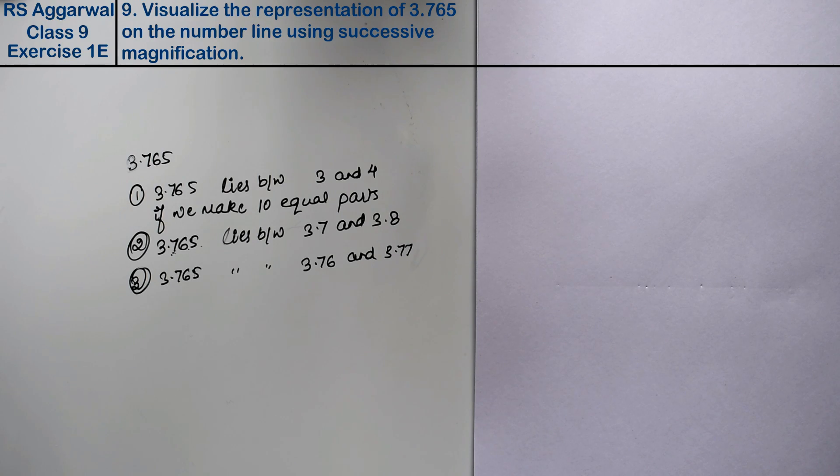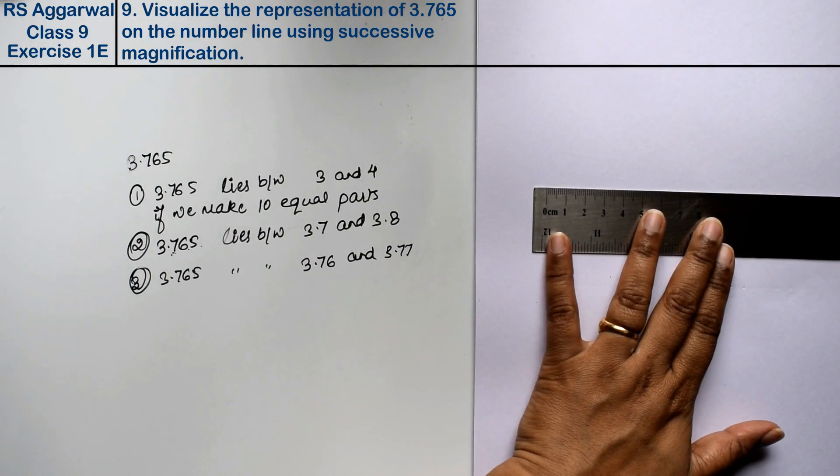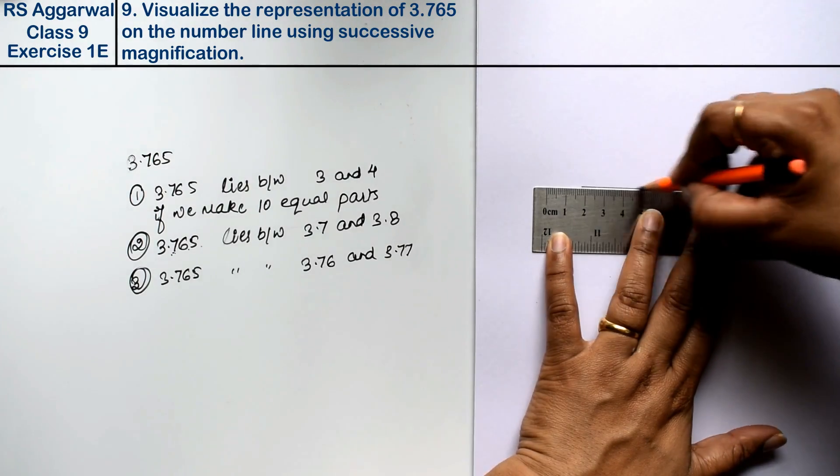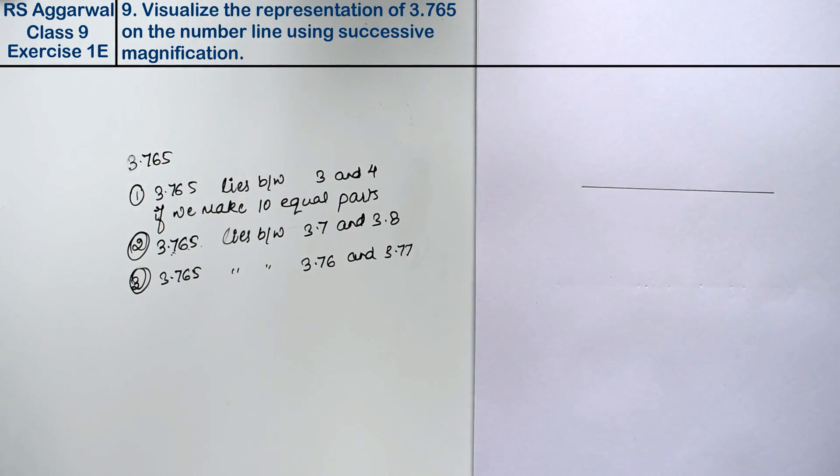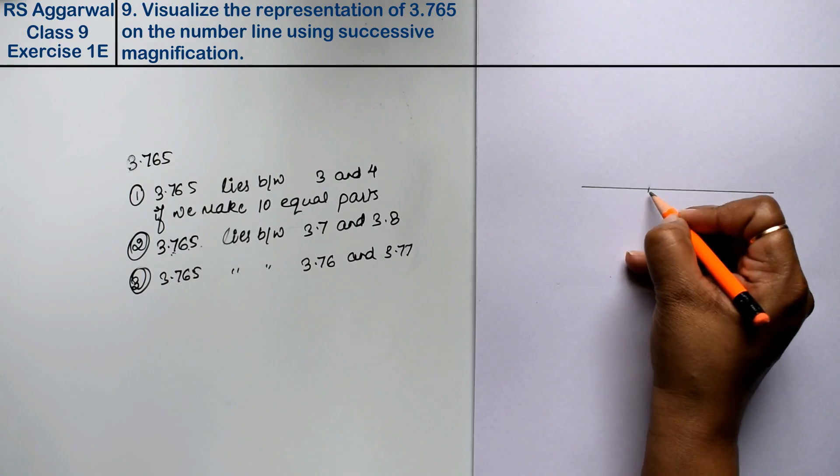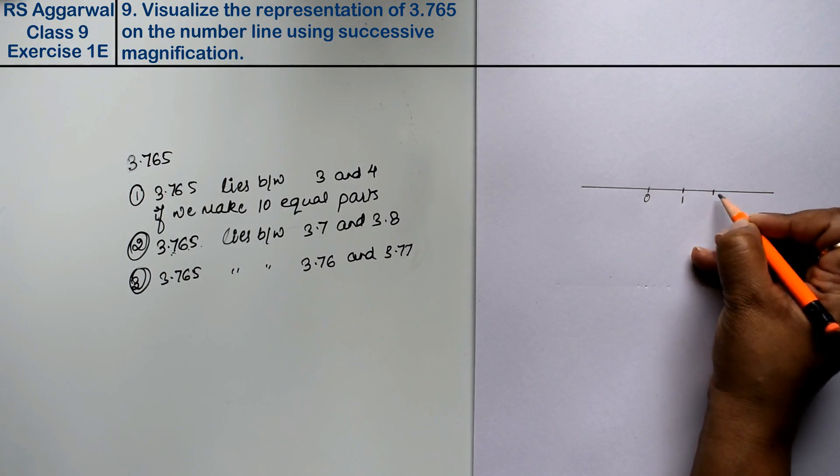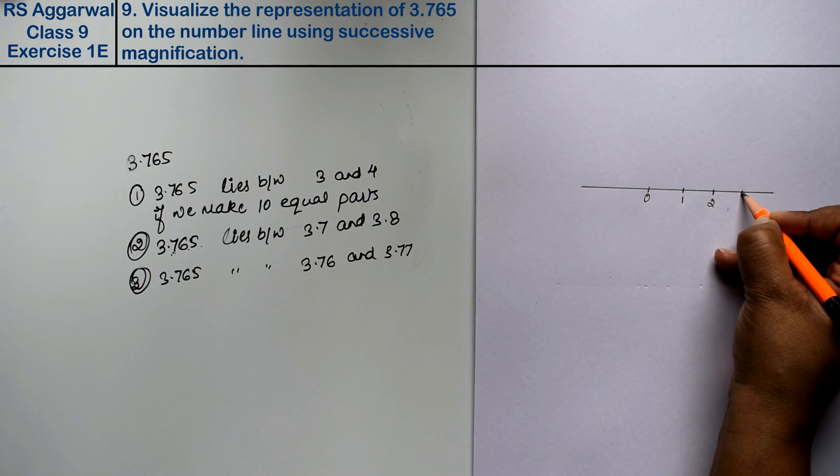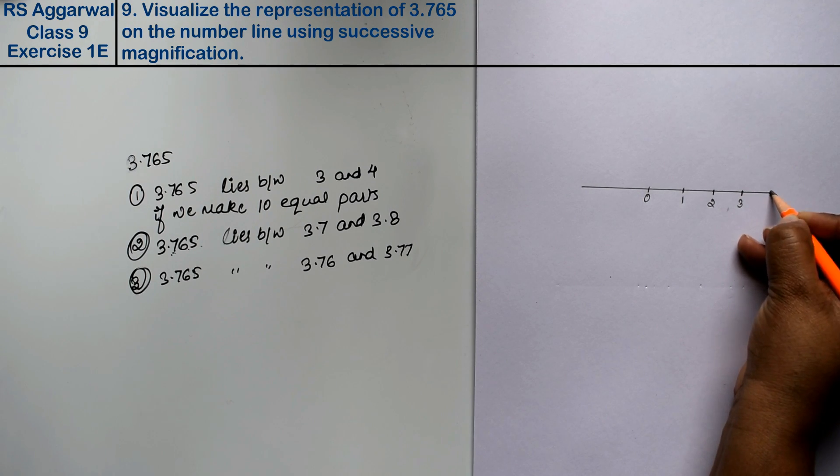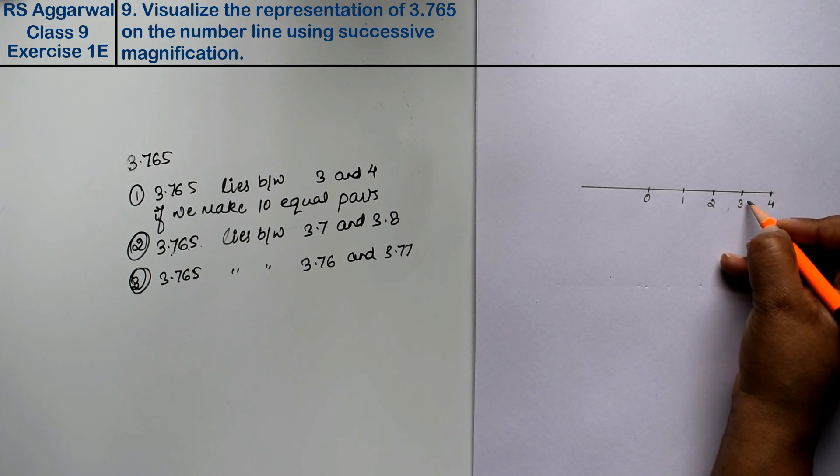First, we will make a first number line. First step, I am making the number line. This is 0 point, this is 1 point, 2, 3, and 4. So we will lie between these numbers.